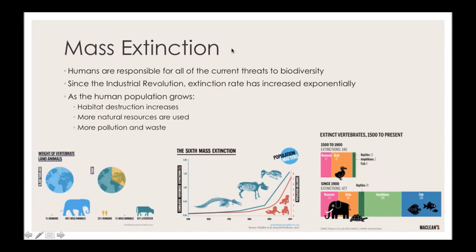You may have heard of the term mass extinction, which means animals are going extinct at an alarming rate. There have been several mass extinctions — when we think of the dinosaurs, likely caused by a comet. But for the first time in history, humans are responsible for all of the current threats to biodiversity. There isn't a meteor coming for Earth — we are the meteor on Earth, so to speak. Humans are responsible for all of these threats.